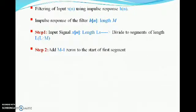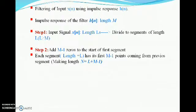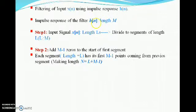In step two, I am going to add M minus 1 zeros to the start of the first segment. Then I am going to take the M minus 1 points from the previous segment and add them to the beginning of the next segment — that is, every segment will have its first M minus 1 points coming from the previous segment. These two parts make up step two.